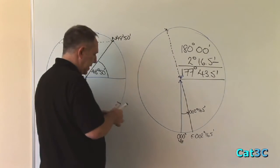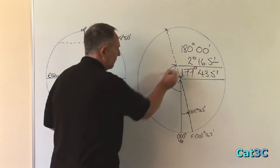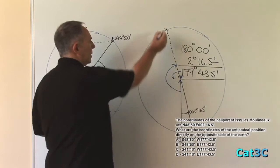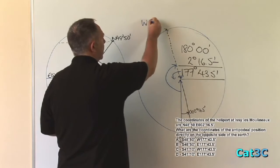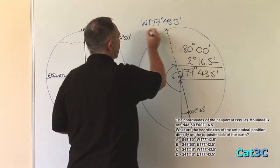That would be the size of the angle from the Greenwich Meridian to that meridian. Therefore, this point will be at west 177 degrees 43.5 minutes.